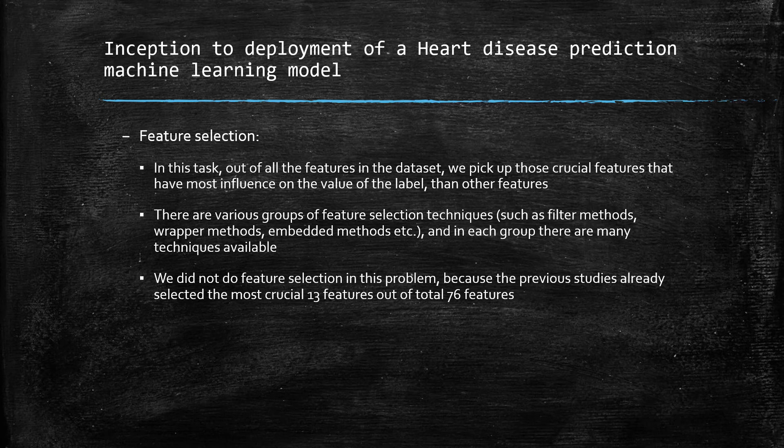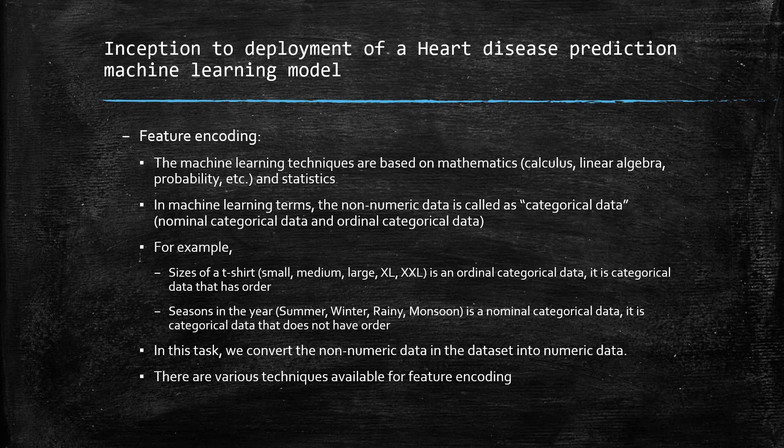In this particular example, we did not perform any feature selection because, out of the 76 features available in the dataset, many previously performed researchers have indicated the 13 most crucial features that affect the value of the label. So we started off by picking those 13 features.